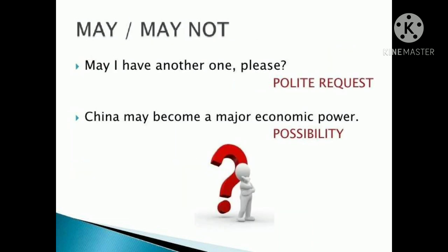Next is may, or may not. May or may not is used to ask for permission. For example: 'May I change my seat, ma'am?' May is also used to give permission, and may not is used to deny permission, in a formal manner. For example: 'May I come in?' or 'May I have another one please?' That is a polite request in a formal way. For an informal way, we use can.